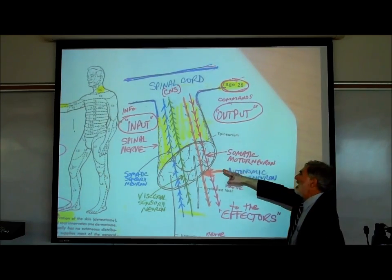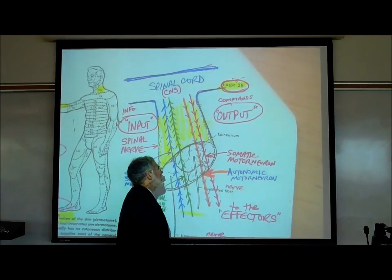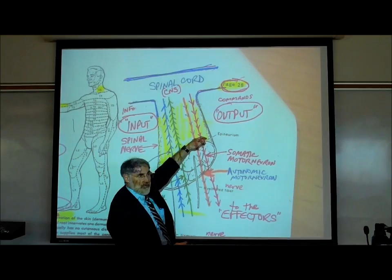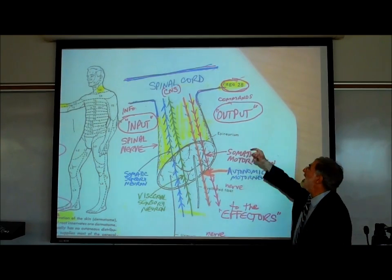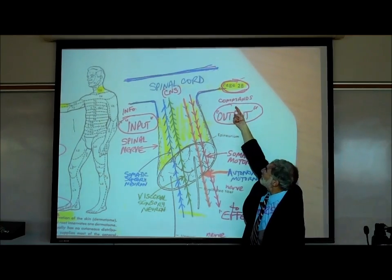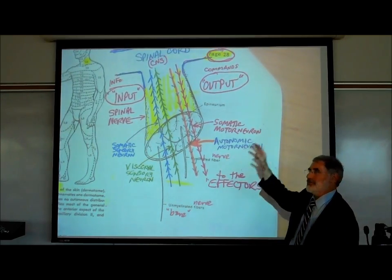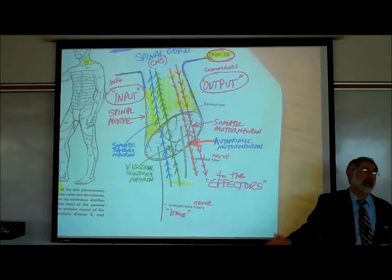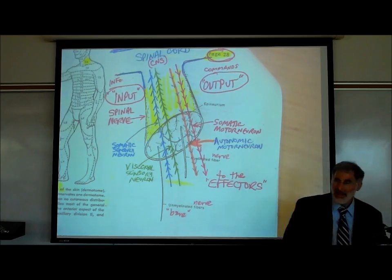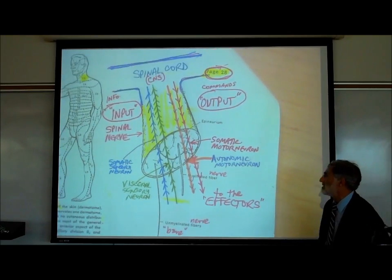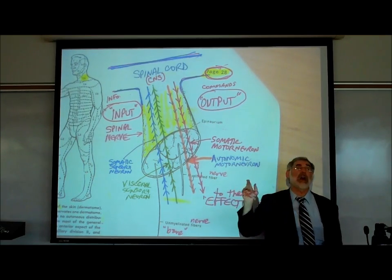The orange and red lines have arrowheads pointing away from the central nervous system. These are sending signals — nerve impulses, action potentials — away from the central nervous system. They are sending commands to the effectors of the body, commanding your skeletal muscles, your heart, your internal organs to do something. These are motor or efferent neurons. The red ones are labeled somatic motor neurons, and the orange ones are autonomic motor neurons.